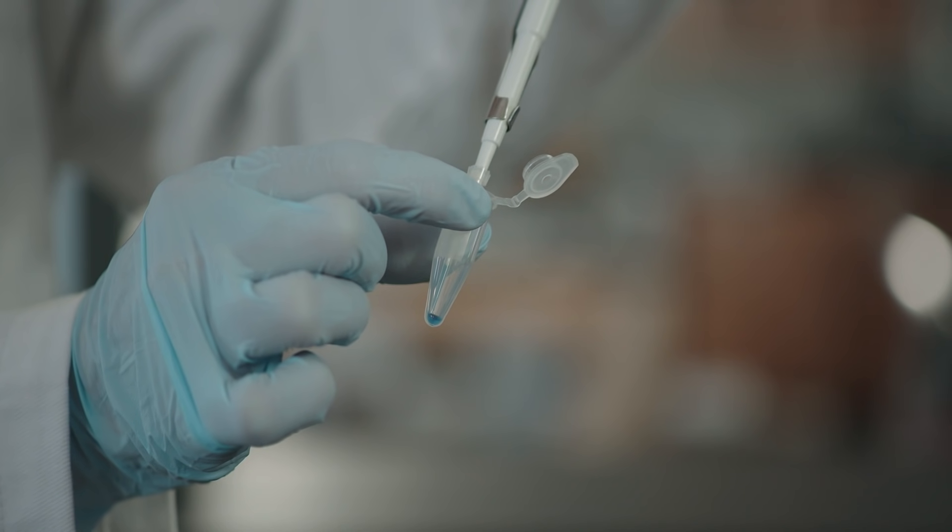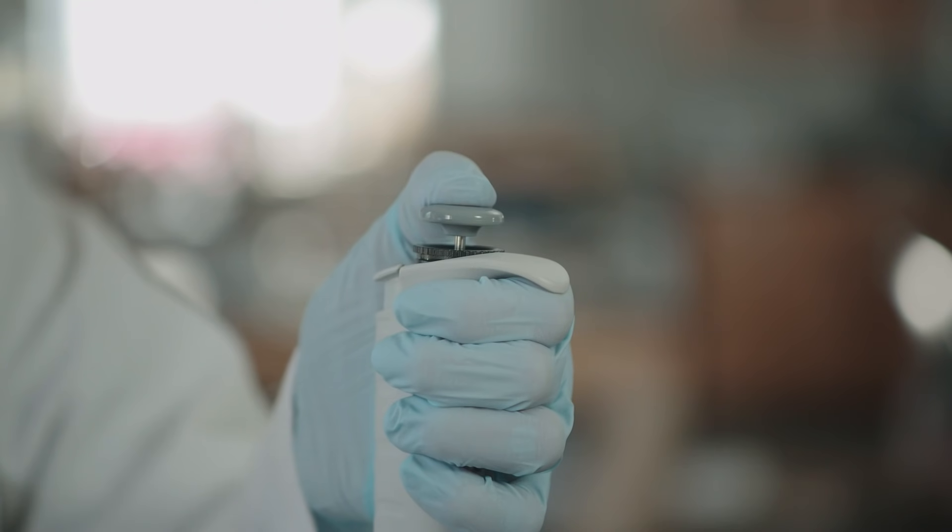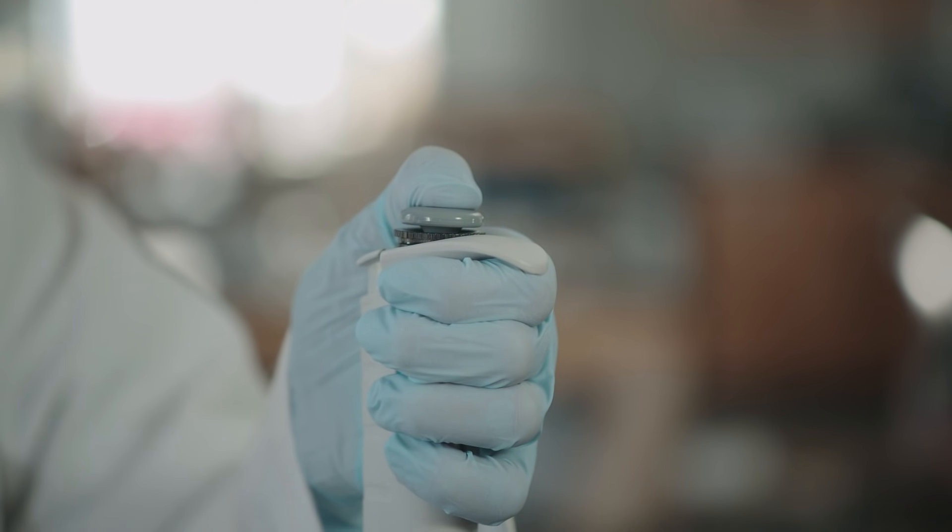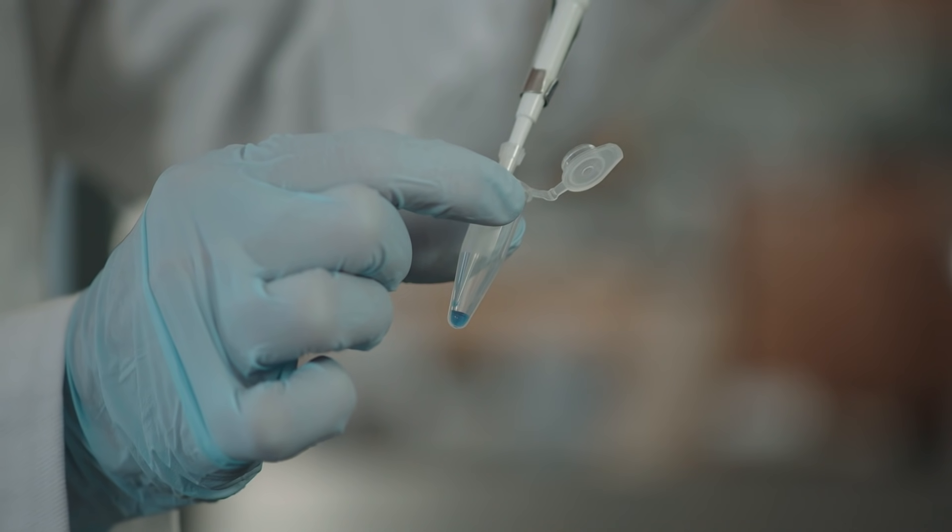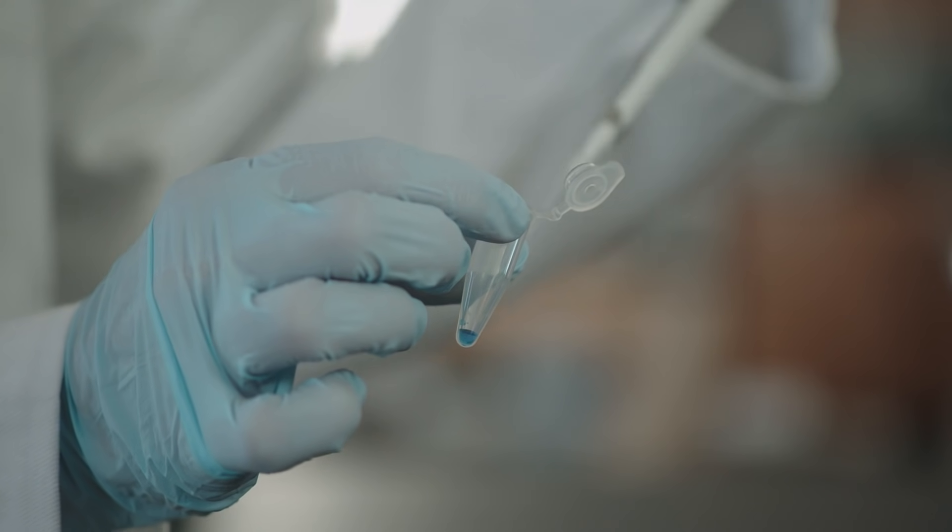Remember that the plunger has two stops and that you pushed to the first stop when you were taking fluid up into the pipette tip. To remove the last bit of fluid from the pipette tip, push past this first stop to the second stop. This will expel any liquid remaining in the pipette tip. Hold down the button until the tip is no longer touching the fluid. Otherwise, you may aspirate the fluid back up into the tip.